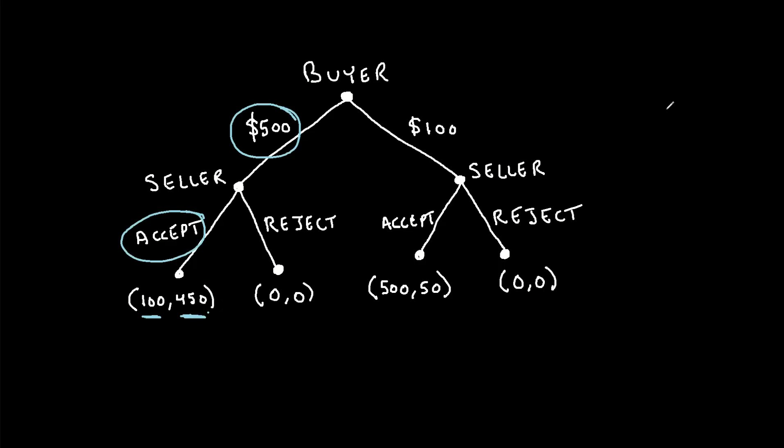So in this case, we say the seller is the second player in this game. They make the second move or the second decision. We can see the payoff in all four scenarios down here.